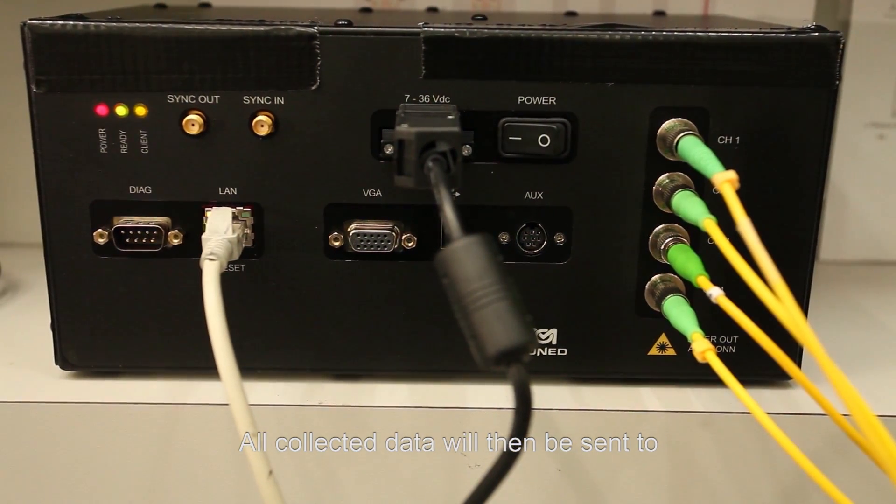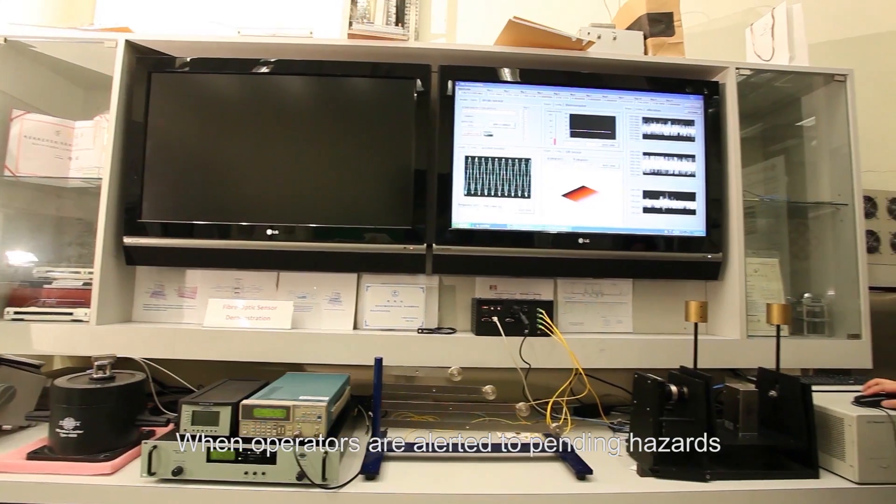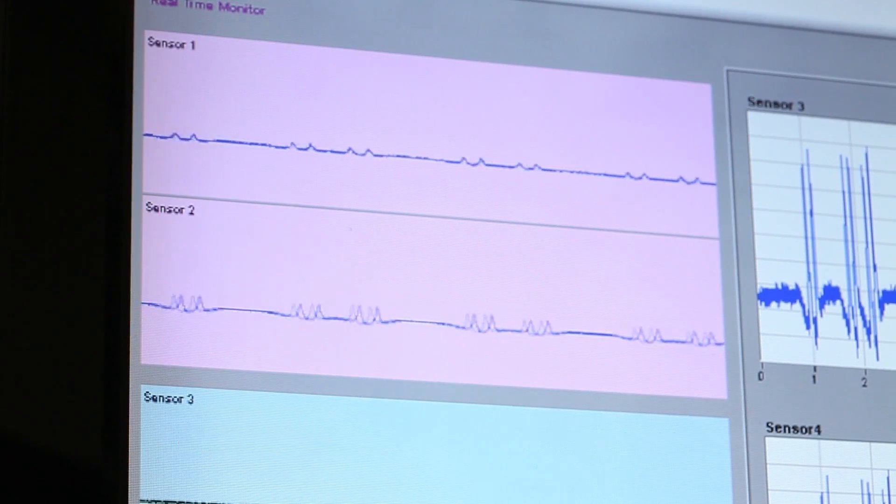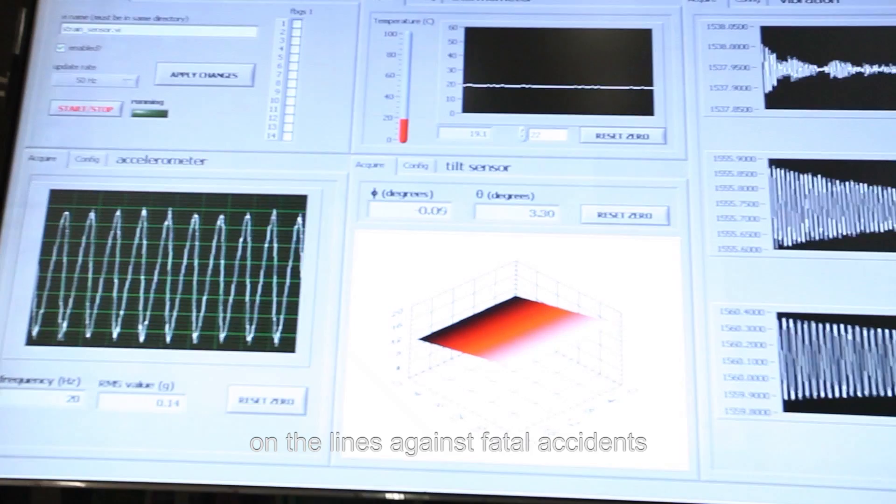All collected data will then be sent to the central computer system for analysis. When operators are alerted to pending hazards, they can take action immediately to protect trains on the lines against fatal accidents.